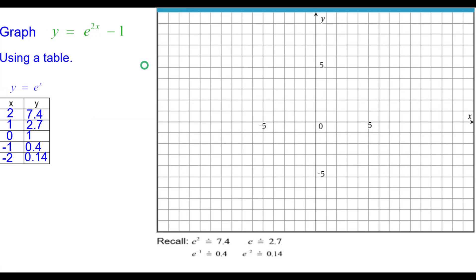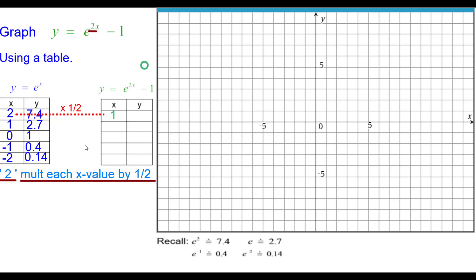Using a table, these are our 5 points that we usually plot on the parent function y equals e to the x. The 2, we need to multiply each x value by its reciprocal, 1 half. So 2 times 1 half is 1. I'd like you to go ahead and finish those 4 values. Pause to do so. Resume when you're ready.